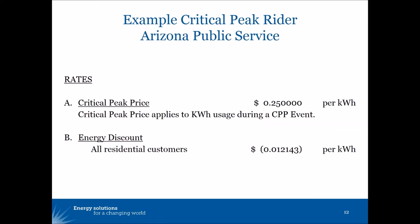Under the Arizona tariff, the utility will call a critical peak event not two hours in advance, but actually by 4 p.m. on the preceding day — saying there's going to be a critical peak tomorrow from 2 to 7 p.m. So the critical peak is always during the same hours, and customers know a day in advance. In the Oklahoma example, the critical peak could be any hours of the day and customers find out two hours in advance.